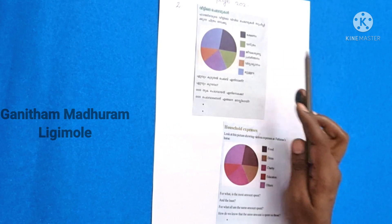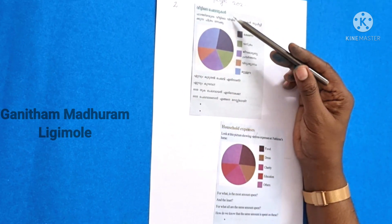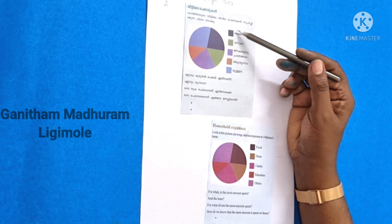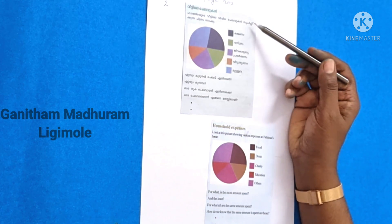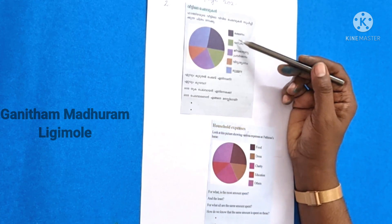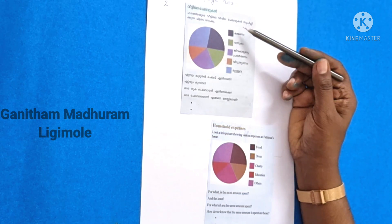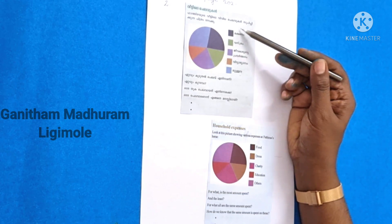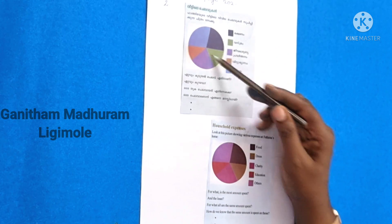Page number 202 is the household expenses. You can see that. Look at this picture showing various expenses at a house. Now let me tell you a little about this picture.